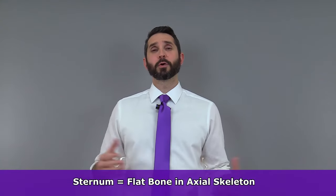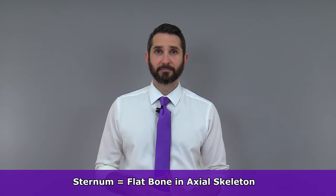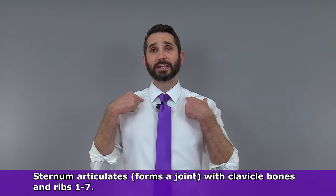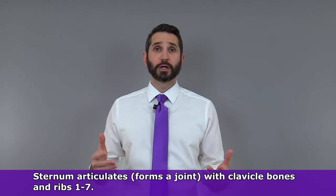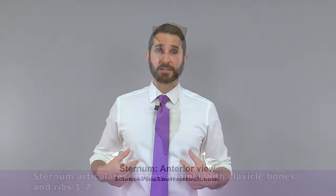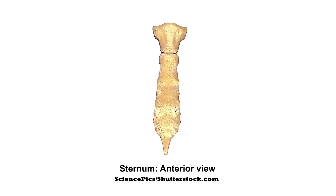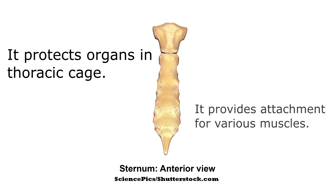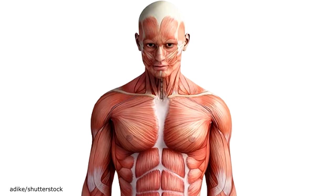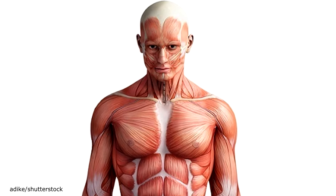The sternum is classified as a flat bone, which makes it part of your axial skeleton. It articulates with the medial ends of your clavicle bone, also called your collarbone, as well as the costal cartilages of your true ribs, which are ribs one through seven. The sternum's long flat shape provides protection for the important organs located within the thoracic cage, and it also provides attachment points for various muscles such as the pectoralis major muscles and the diaphragm.